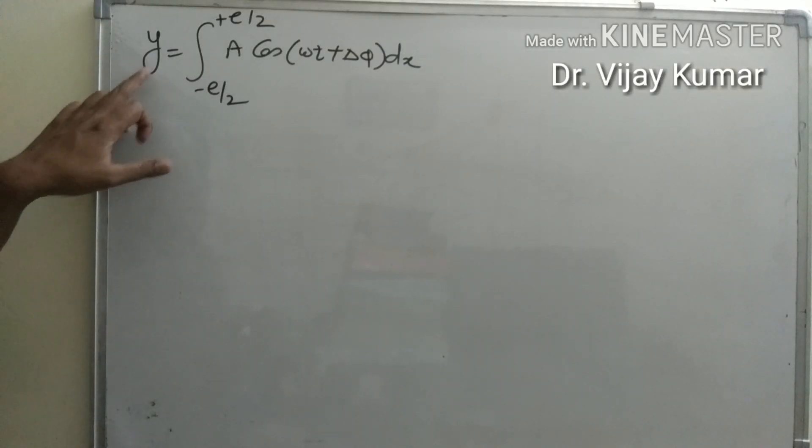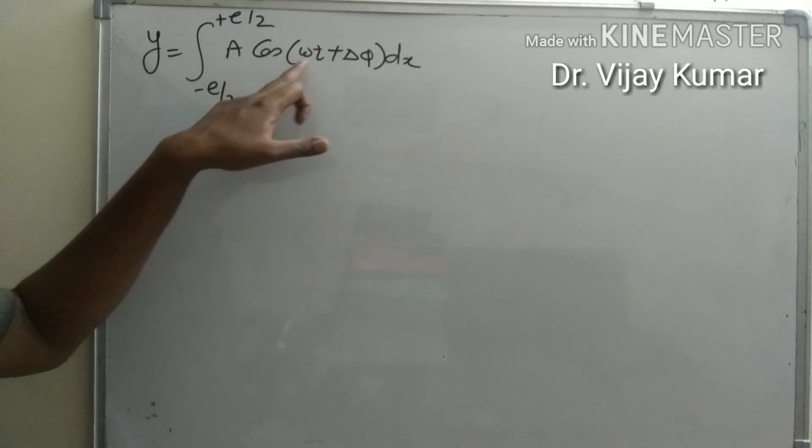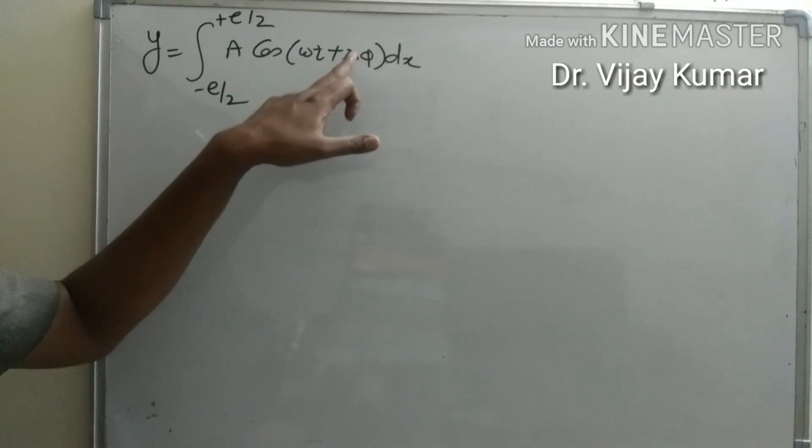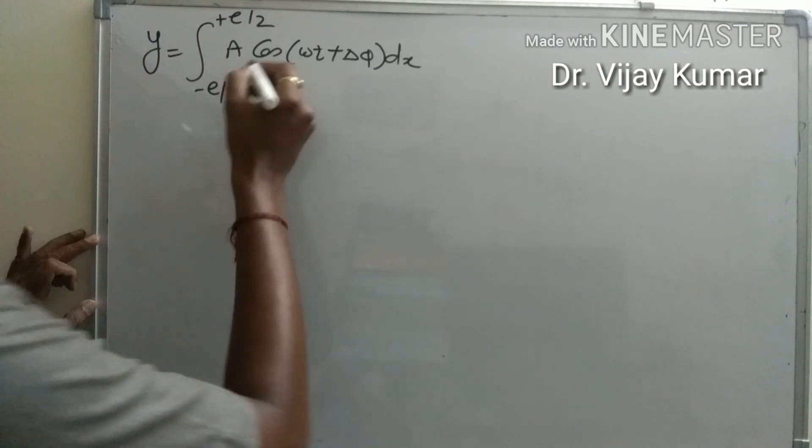In the previous video, we calculated y equals the integration from minus e by 2 to plus e by 2 of a cos(omega t plus delta phi) dx, where delta phi is the phase difference between two diffracted rays. Now,